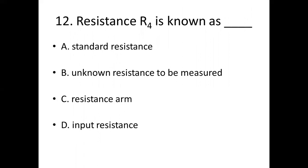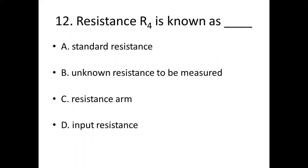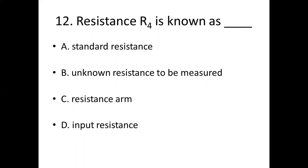Twelfth bit. Resistance R4 is known as dash. Option A: standard resistance. Option B: unknown resistance to be measured. Option C: resistance arm. Option D: input resistance. Answer: Option B, unknown resistance to be measured.